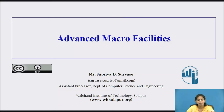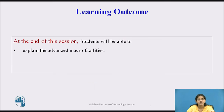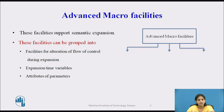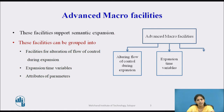Hello everyone. Today we are going to see the advanced macro facilities in macro. The learning outcome: at the end of this session, students will be able to explain the advanced macro facilities. Basically, the advanced macro facilities support the semantic expansion, and these facilities are grouped into three: first is the facilities for alteration of flow of control during the expansion, second is the expansion time variables, and the third is the attributes of parameters.